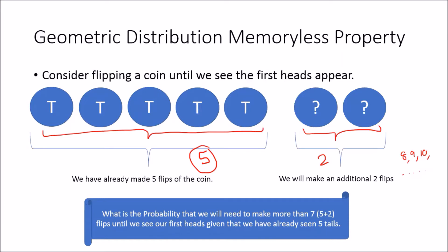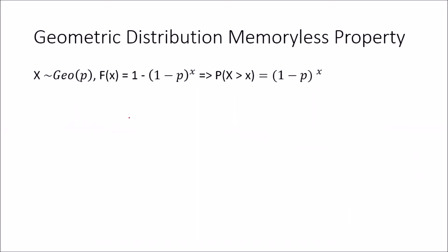What's the probability that we're going to need to make more than seven flips until we see our first heads, conditioning on the fact that we've already seen five tails? Let's remind ourselves: if X is distributed geometrically with parameter p, then the CDF is given by 1 minus (1 minus p) to the power of x. That means the probability that X is greater than x is simply (1 minus p) to the power of x.